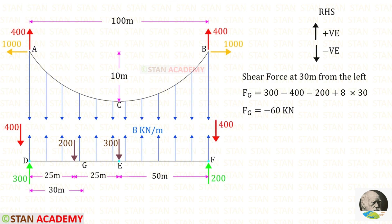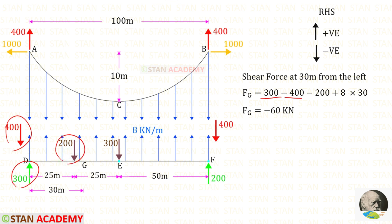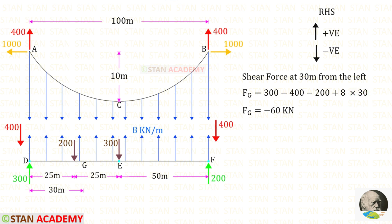Now in the girder, let us find the shear force at 30 meters from the left side. Let us keep the point as G. The reaction VED is acting upwards so it is positive. The cable reaction is acting downwards so it is negative. The 200 kN load is acting downwards, also negative. The equivalent uniformly distributed load is acting upwards, positive, over a distance of 30. Finally, for the shear force at point G we will get minus 60 kilonewton.